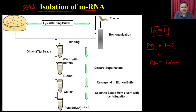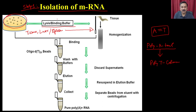To isolate mRNA, first culture the cells, then place them in lysis buffer. If working with tissue such as liver or spleen, first homogenize to produce a single-cell suspension, then incubate with lysis or binding buffer to get cell lysate. The cell lysate contains messenger RNA, protein, and other RNA species. Since messenger RNA has the poly-A tail, it will bind to poly-T beads.